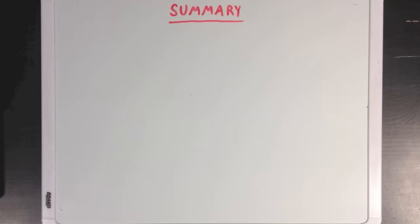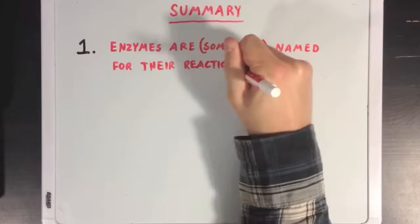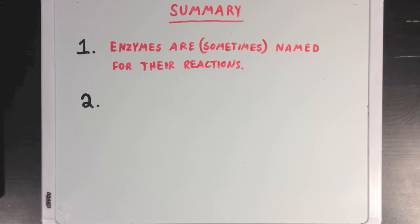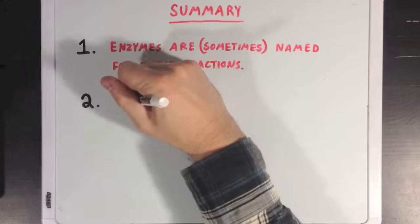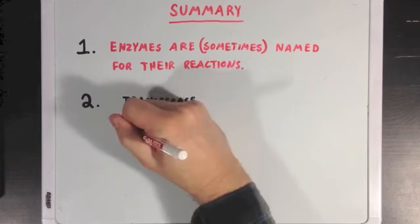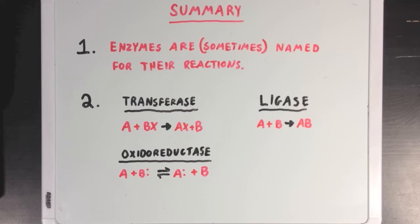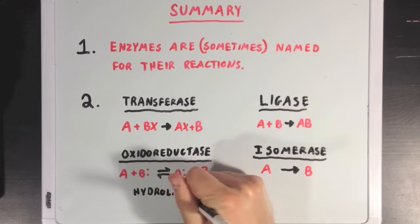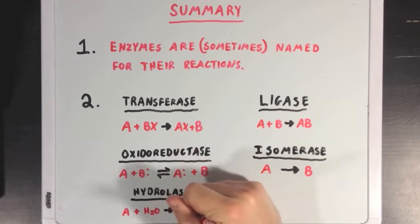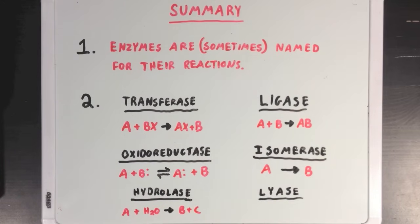So, what did we learn? Well, first we learned that enzymes are sometimes named for their reactions. And next we learned about the six different types of enzymes. We have transferases, which transfer functional groups from one molecule to another. Ligases, which ligate or join two molecules together. Oxidoreductases, which move electrons between molecules. Isomerases, which convert a molecule from one isomer to another. Hydrolases, which break bonds using water. And lyases, which break bonds without using water and without using oxidation.